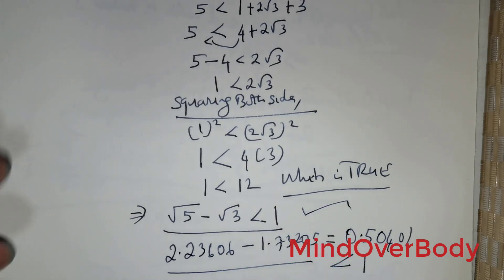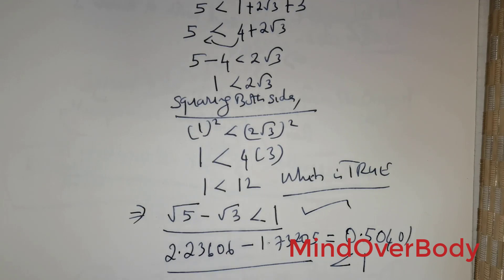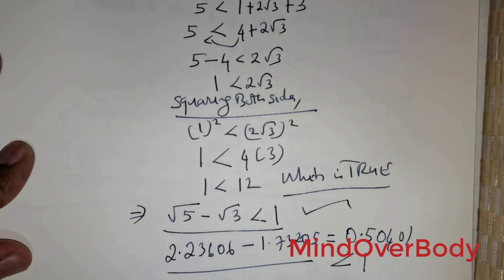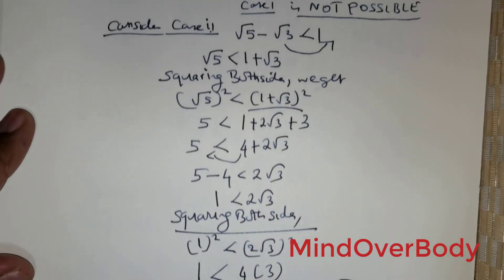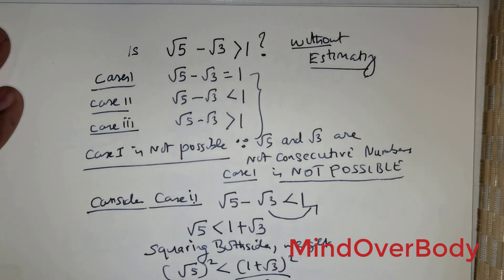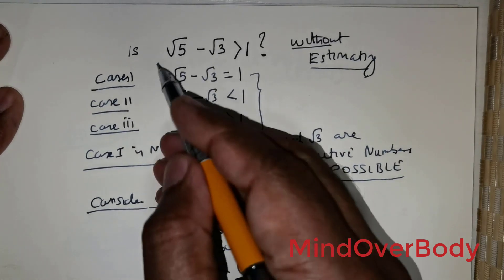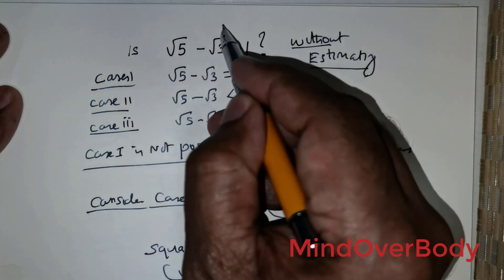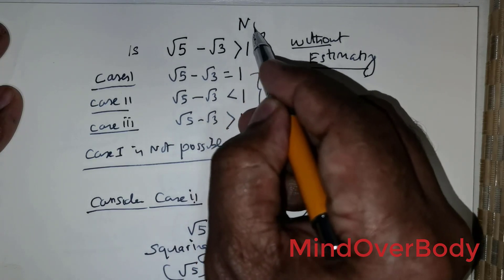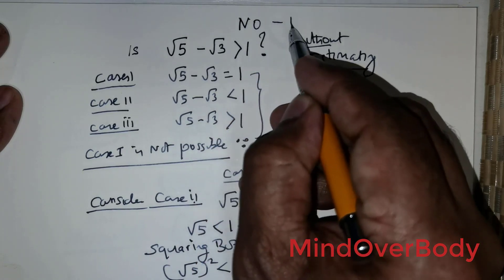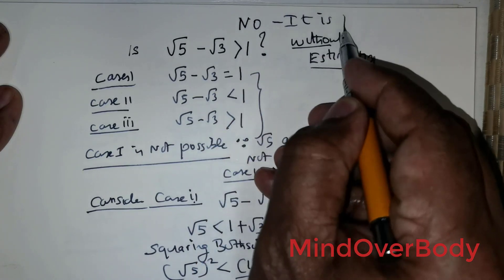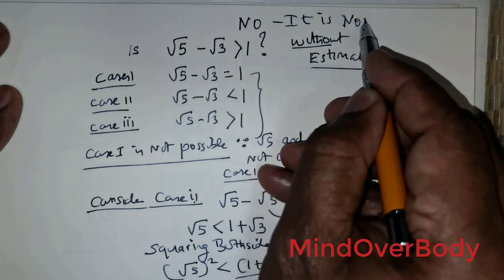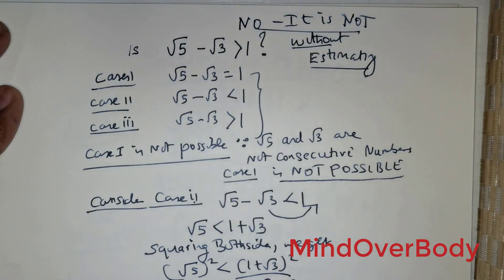Subtracting these gives approximately 0.50401, which is clearly less than 1. So the answer to the question — is root of 5 minus root of 3 greater than 1? — is no, it is not. Thank you, students.